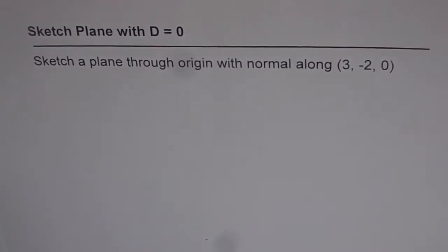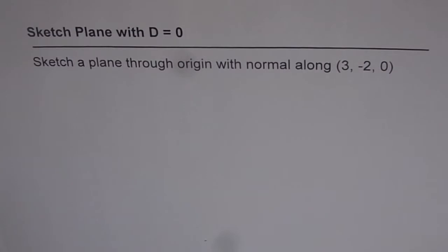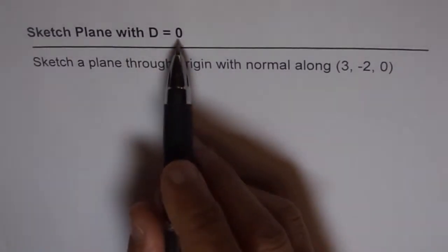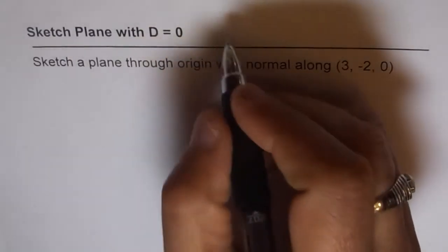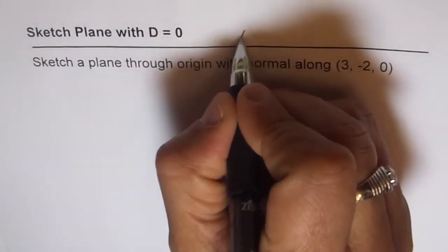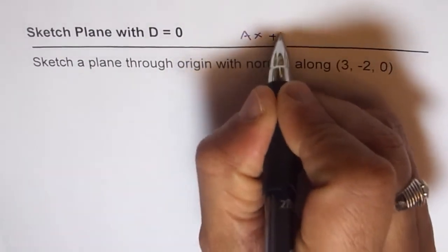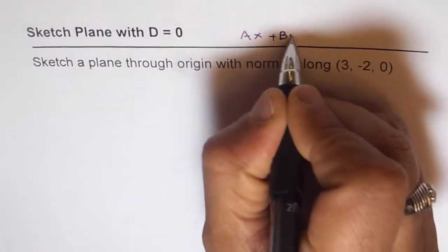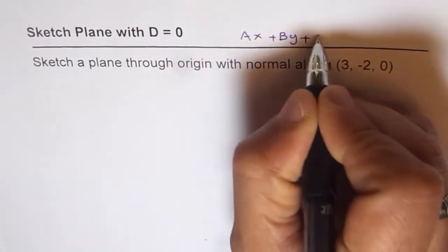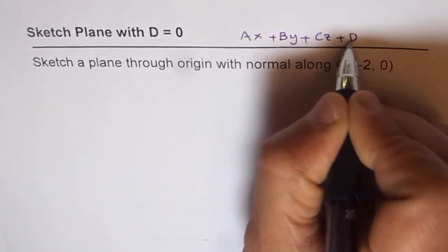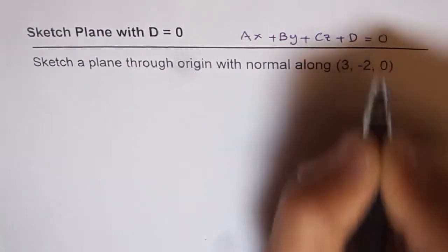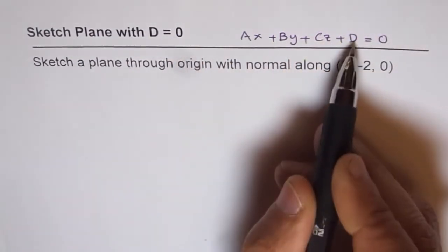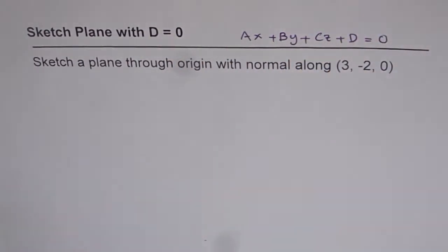Here we have an interesting problem: to sketch a plane where d equals 0. When we say d equals 0, we are referring to the equation of the plane as Ax plus By plus Cz plus d equals 0. So in this case we are saying this d, the constant term, to be 0.